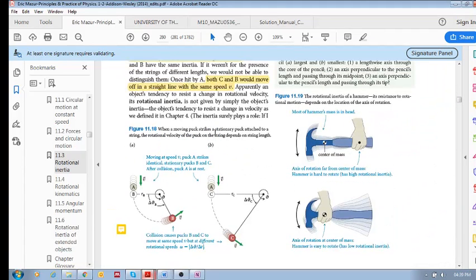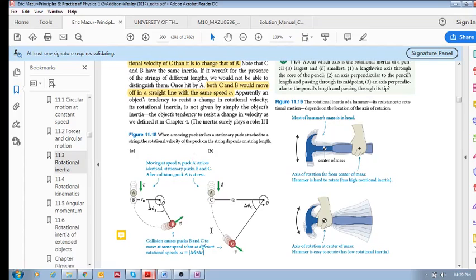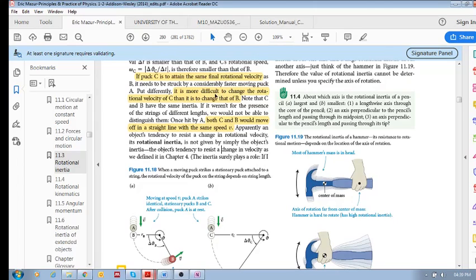Now, the point here is that if I were to get this guy's rotational speed up to this guy's rotational speed, then I would need to hit it by a considerably faster moving puck A.